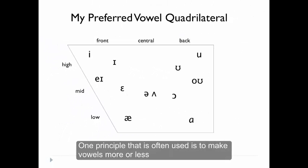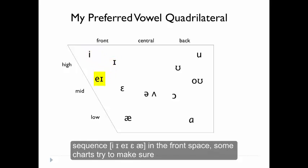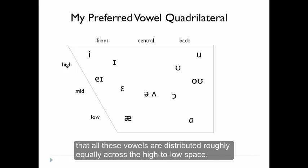One principle that's often used is to make vowels more or less equidistant from each other. So where we have the sequence [ɛ], [ɪ], [æ] in the front space, some charts try to make sure that all of these vowels are distributed roughly equally across the high to low space.